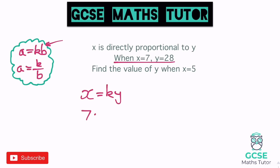Substituting in: when x is 7 and y is 28, we get 7 equals k times 28, which I'll write as 7 equals 28k. To solve for k, divide both sides by 28. Without a calculator, simplify the fraction 7 over 28 by dividing top and bottom by 7, giving 1 over 4.